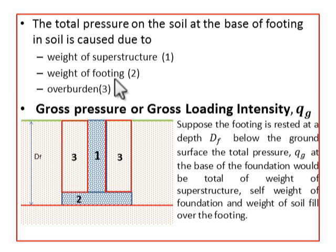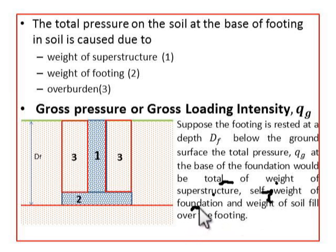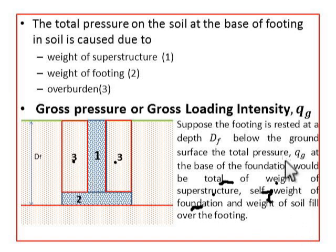Now comes the first term: gross loading intensity. Suppose the footing is rested at a depth D_F. Q_G, the gross loading intensity, would be the total weight of the superstructure, plus the self-weight of the foundation, plus the weight of the soil fill over the footing — that is the overburden. These three are the components of gross loading intensity.